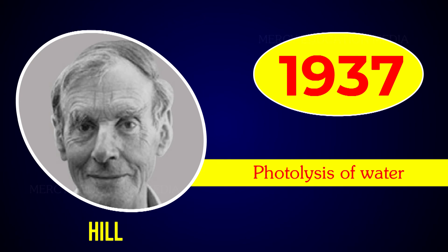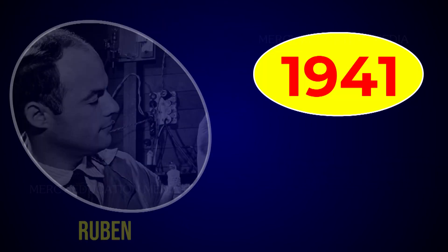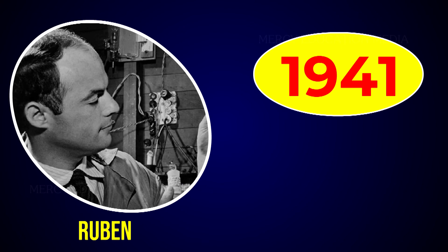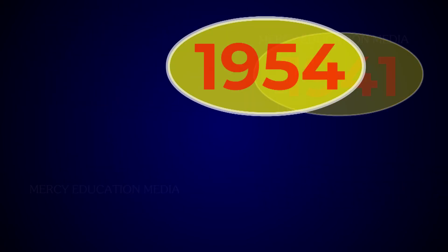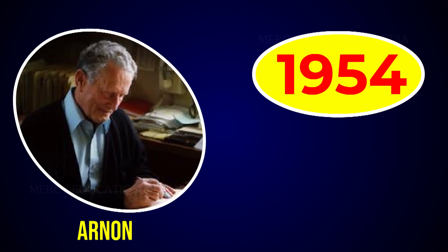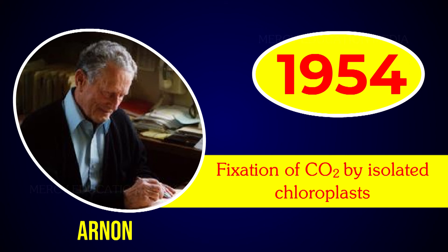In 1937, Hill demonstrated the photolysis of water by isolated chloroplasts in the presence of suitable electron acceptors. In 1941, Ruben and Kamen used oxygen-18 to show that oxygen comes from water in photosynthesis.